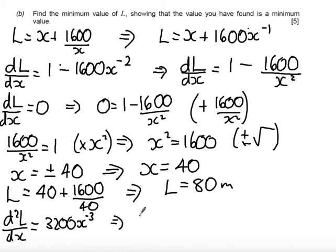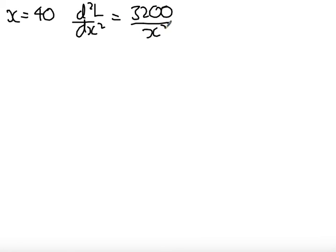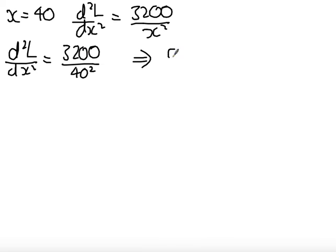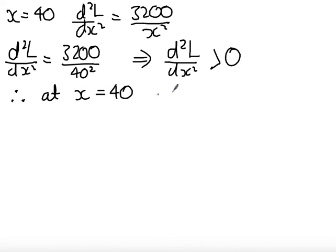Now if I rewrite this as D2L by DX squared is equal to 3200 over X cubed. So moving on, what I want to do now is I've got X equals 40, I want to find the value of D2L by DX squared, which is 3200 over X cubed. So substituting that in, I get D2L by DX squared equals 3200 over 40 cubed. Either way, this is going to give me a positive answer, so D2L by DX squared is going to be greater than 0, and therefore at X equals 40, we have a minimum.